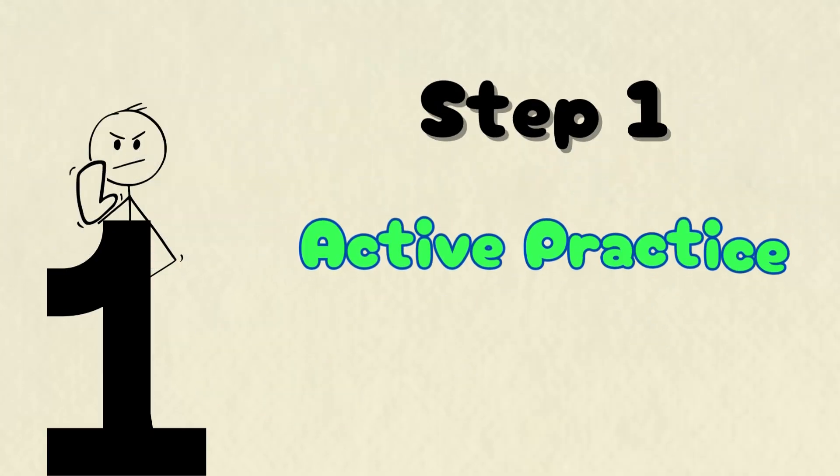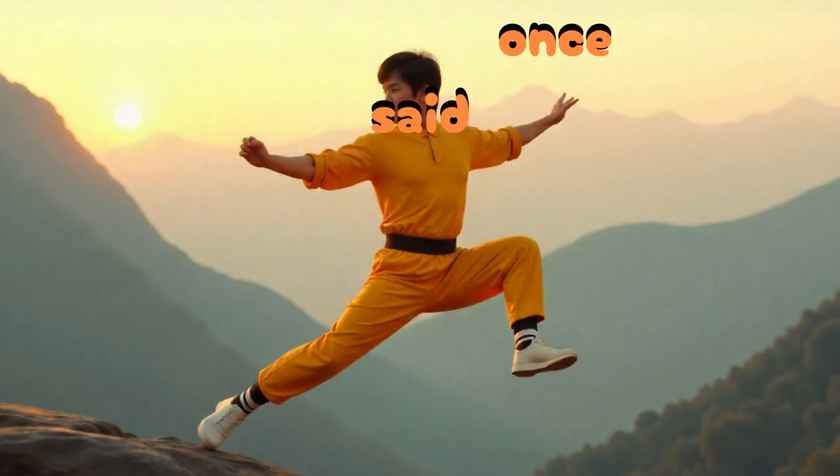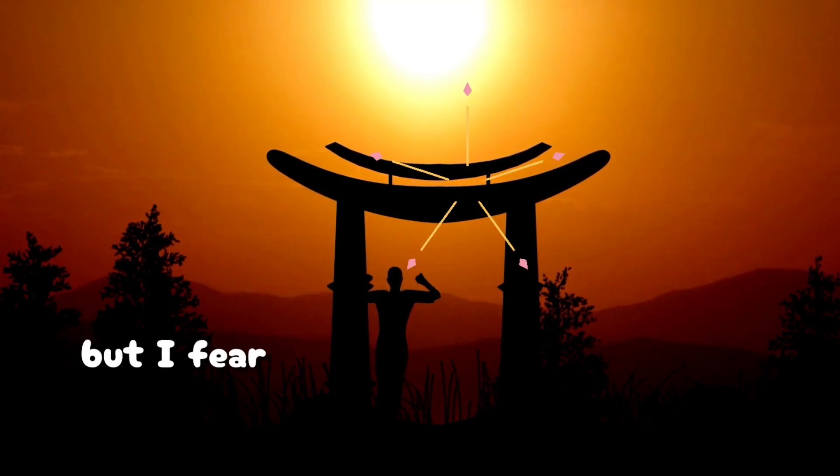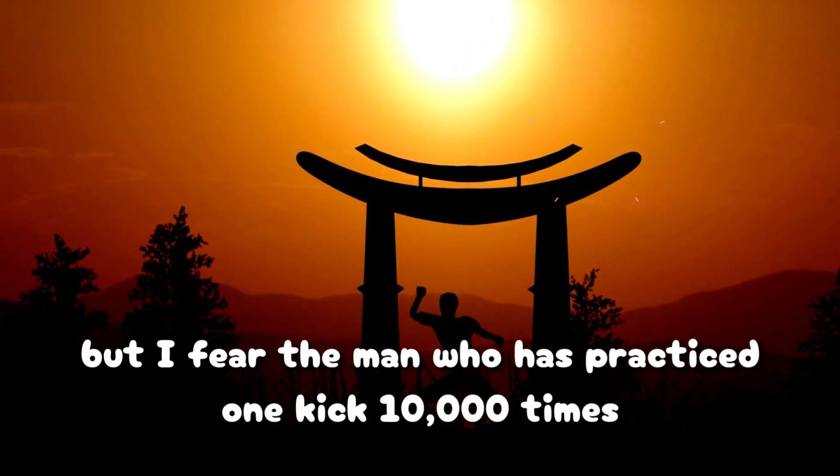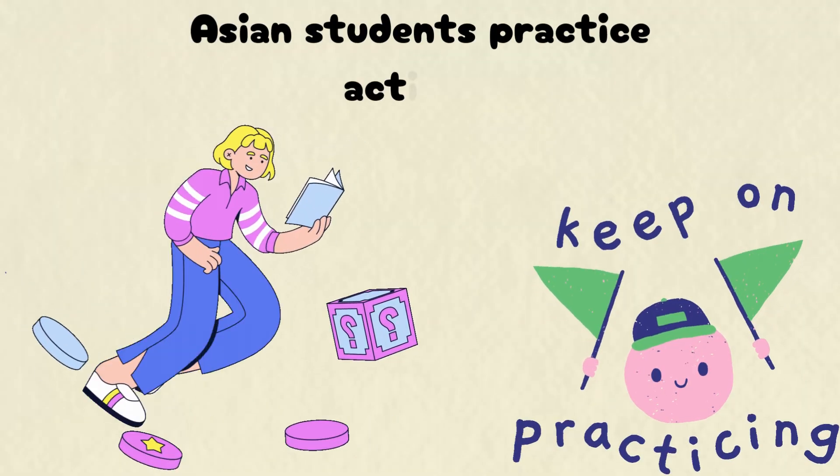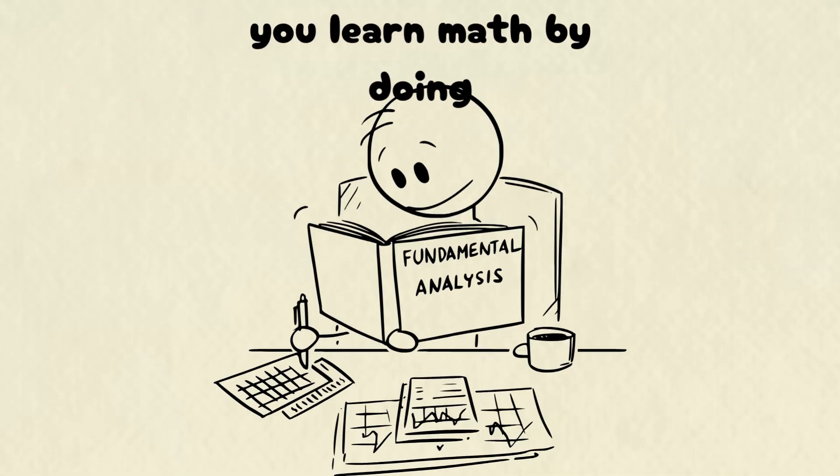Step one, active practice, don't just watch, do. First, Bruce Lee once said, I fear not the man who has practiced 10,000 kicks once, but I fear the man who has practiced one kick 10,000 times. Passive learning won't cut it. Watching videos or highlighting formulas won't make math stick. Asian students practice actively. You don't learn math by watching, you learn math by doing.